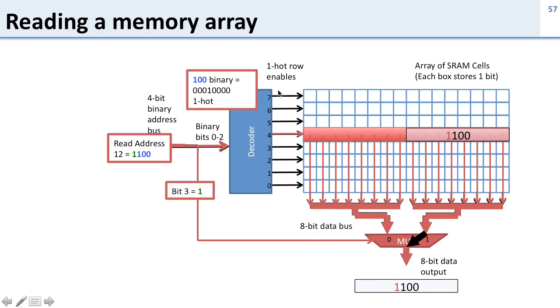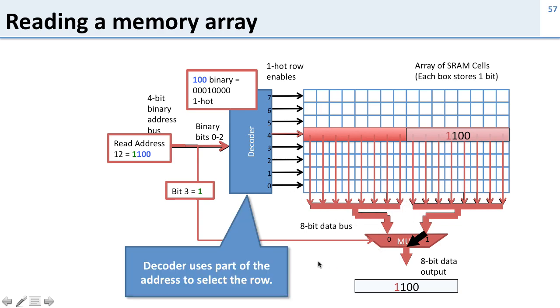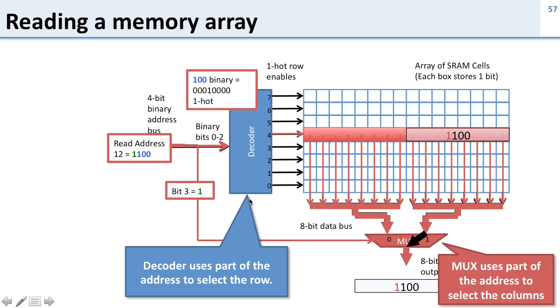So some of our address bits were used to choose which row we used and then one of our address bits was used to choose which half. So we used a decoder and a MUX to build this array so the decoder used the first half of the bits and the MUX used the last bit.